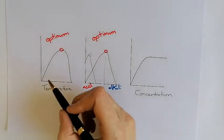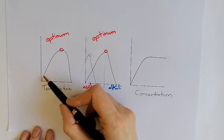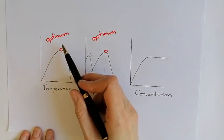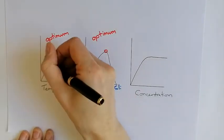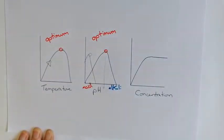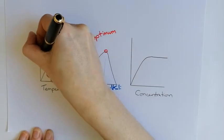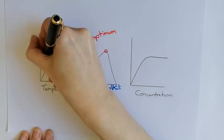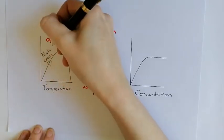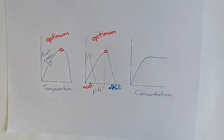For temperature, we have low rate of reaction, getting faster, and then going back down again. So it increases as we go up in temperature because of something called kinetic energy. The more kinetic energy there is, the faster we have substrate and enzyme colliding, the more reactions that we have.